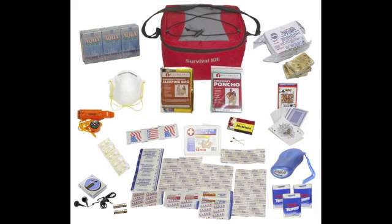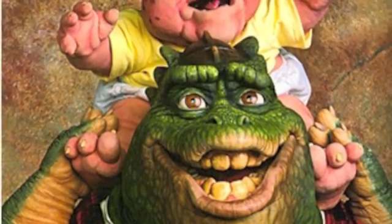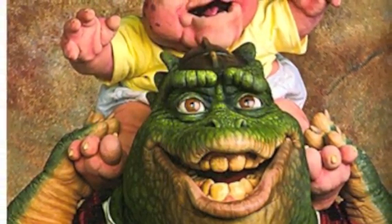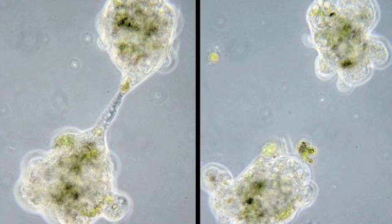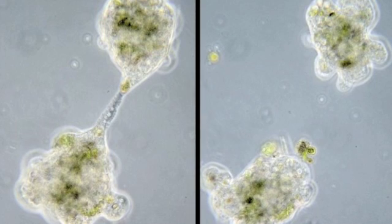Survival on Earth is a surprisingly tricky business. Of the billions and billions of species of living thing that have existed since the dawn of time, most—99.99%—are no longer around.